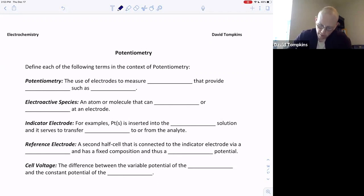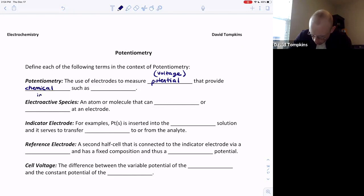Potentiometry, generally speaking, is the use of electrodes to measure potential. Of course, here we measure potential in terms of voltage, and that measured potential is going to provide some sort of information that usually means either the identity or the concentration of an unknown species.